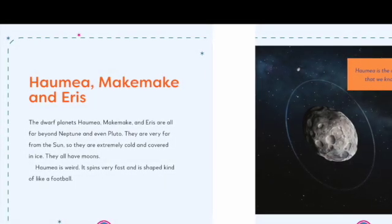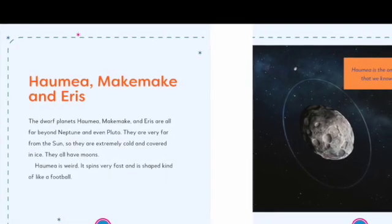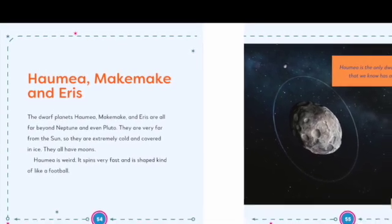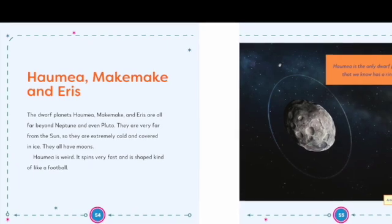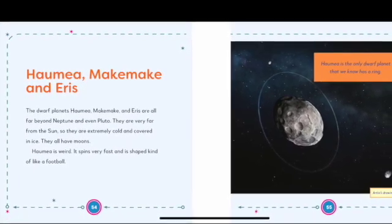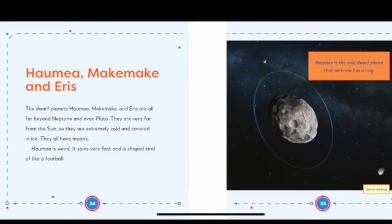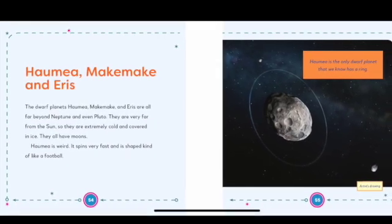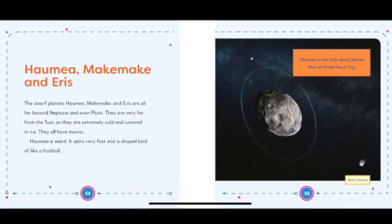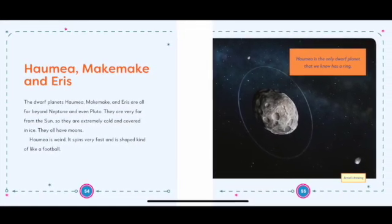Haumea, Makemake, and Eris. The dwarf planets Haumea, Makemake, and Eris are all far beyond Neptune and even Pluto. They are very far from the Sun, so they are extremely cold and covered in ice. They all have moons. Haumea is weird. It spins very fast and is shaped kind of like a football.